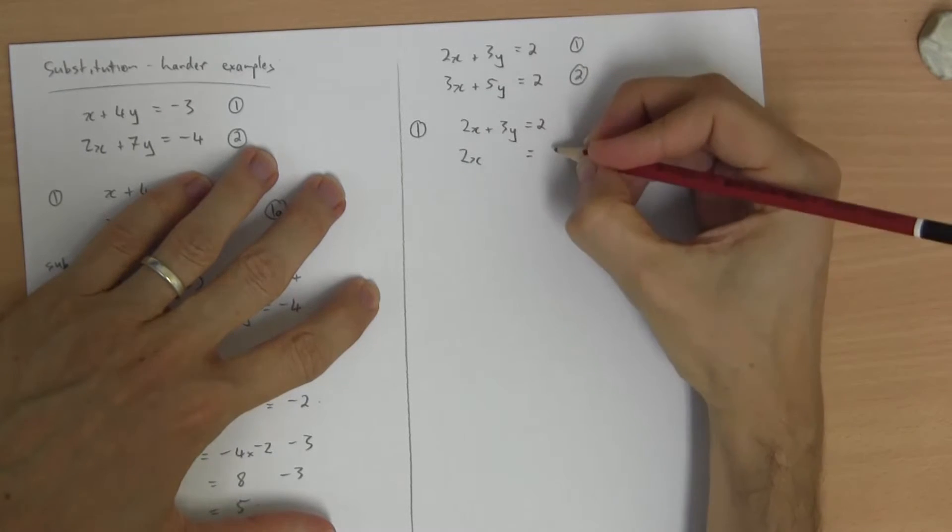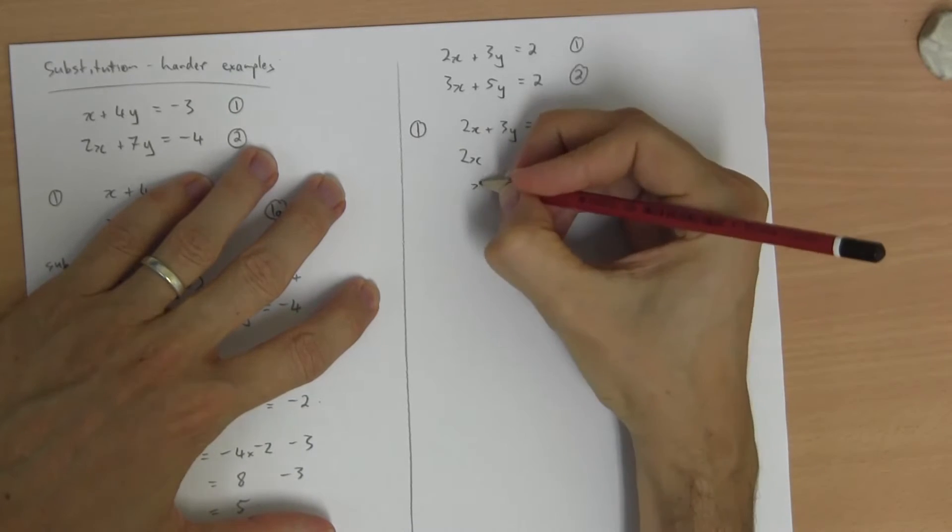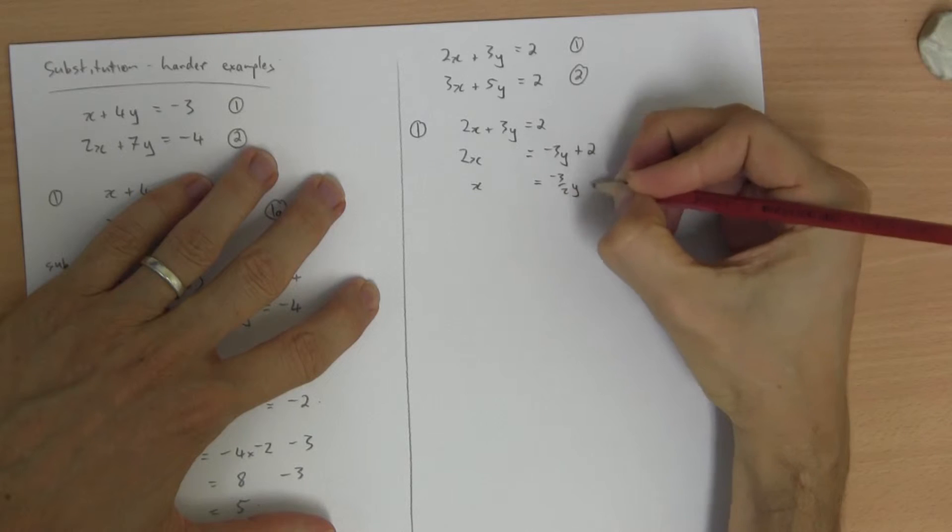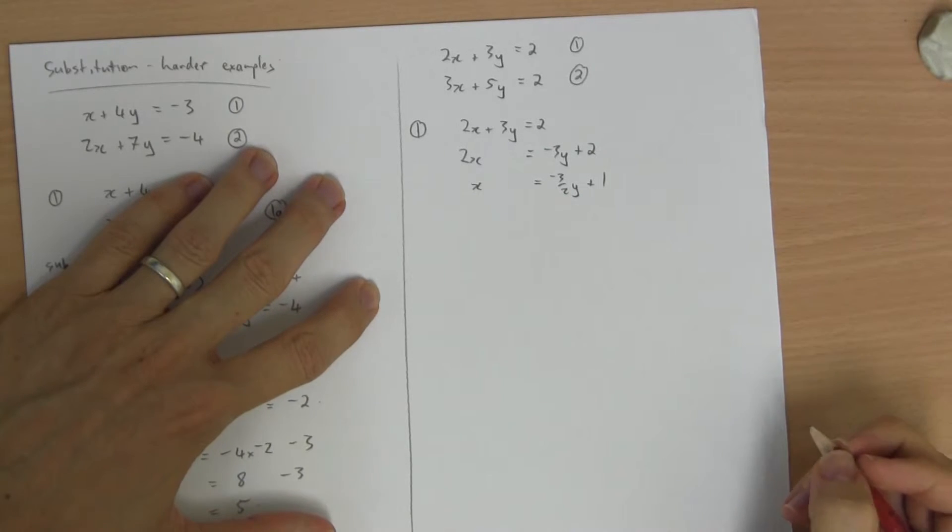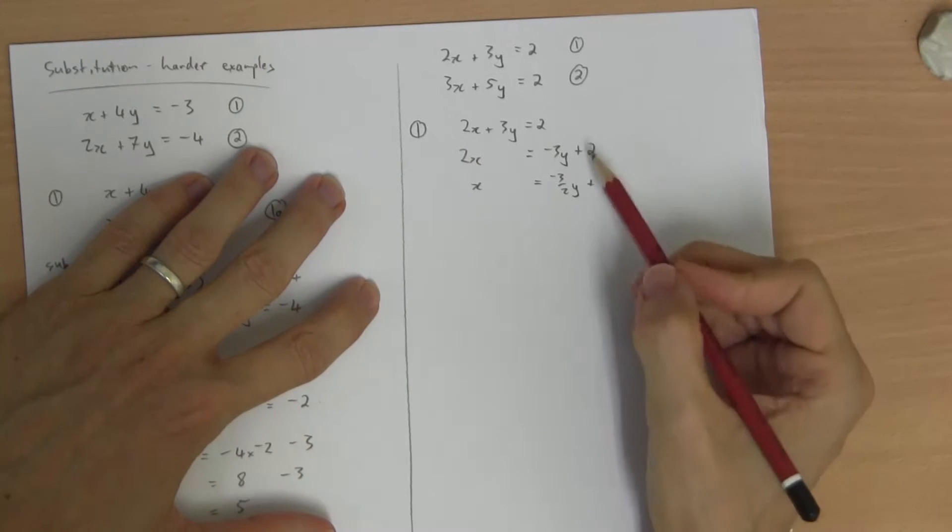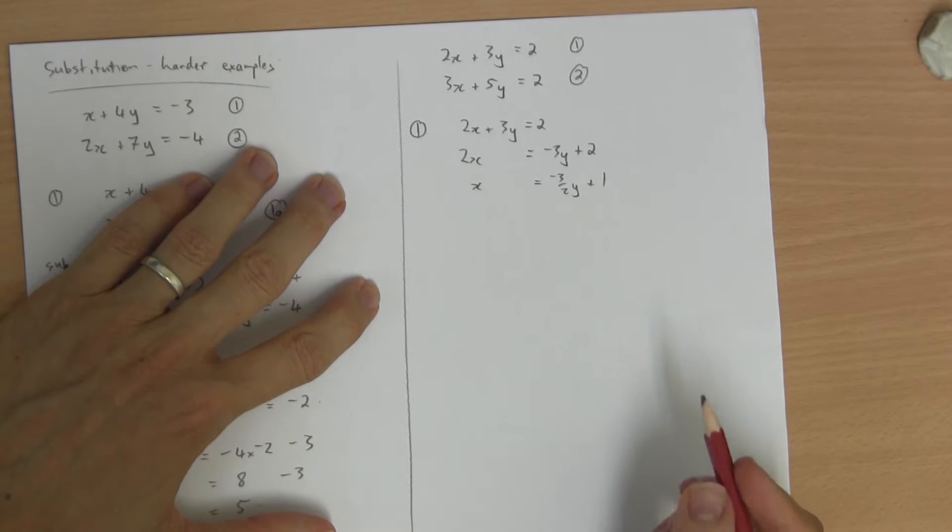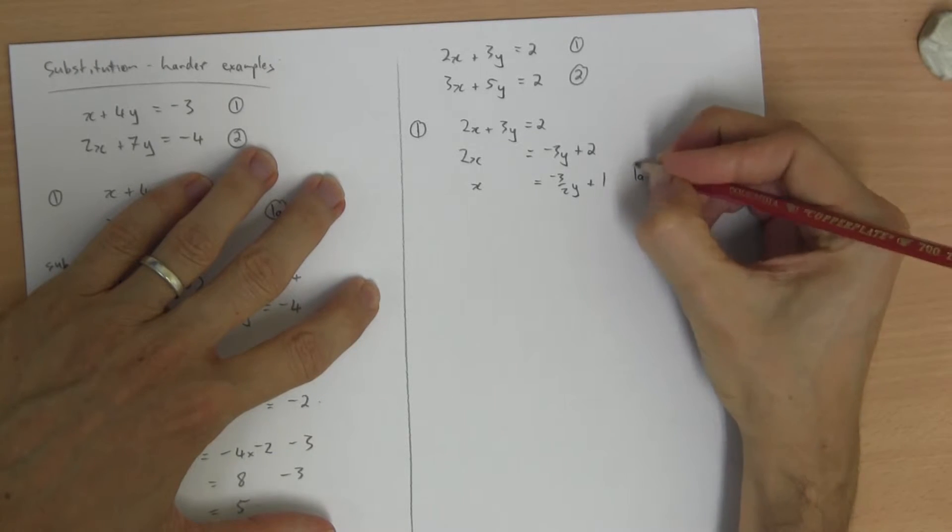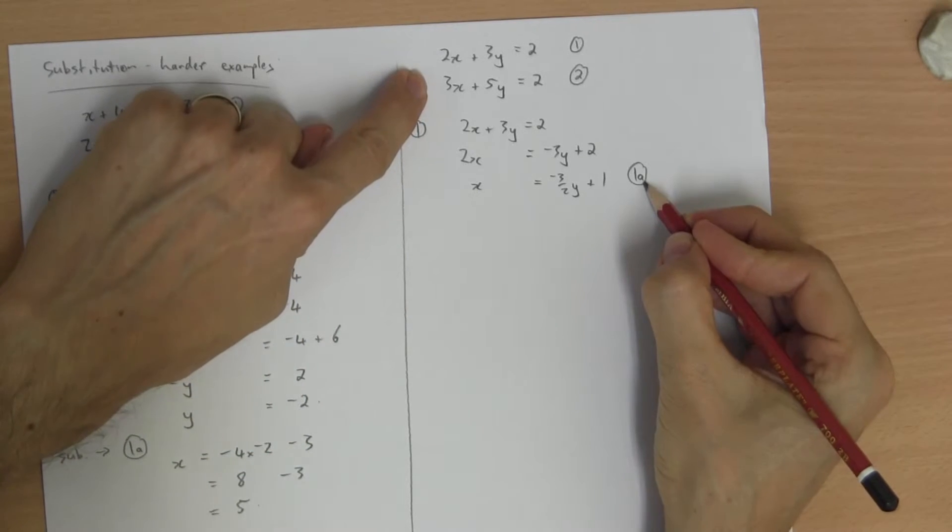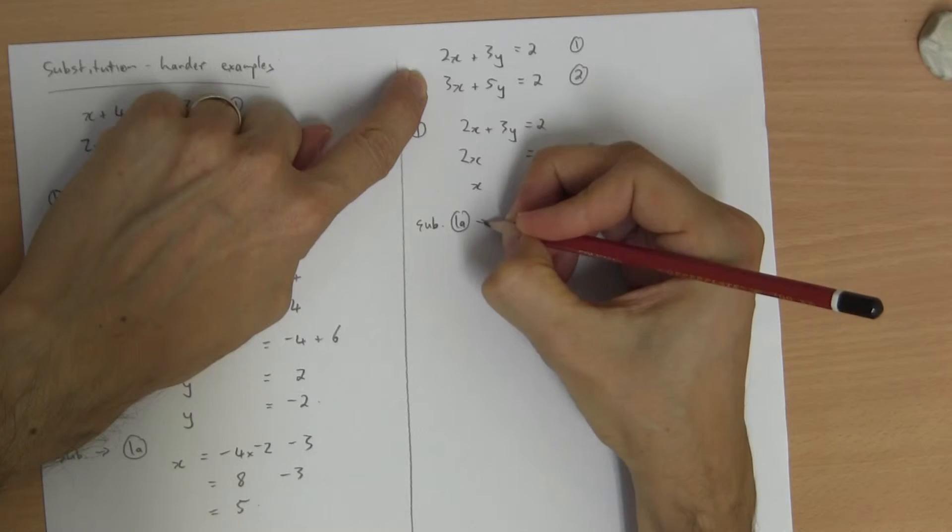2x plus 3y equals 2. 2x, then, must be negative 3y plus 2. Pardon me, x must be negative 3 on 2y plus 1. Be careful, most common mistake I see, divide by 2 if we get to divide this one by 2. It's got to be a half of everything. 1a. Let's substitute that into equation 2. Substitute 1a into 2.